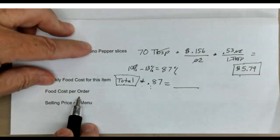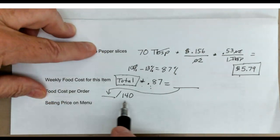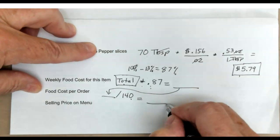Once you have that, you're going to get the food cost per order. You're going to take that number and divide it by how many orders we have, which was 140. So you're going to get an answer here, divided by 140, and that is your food cost.